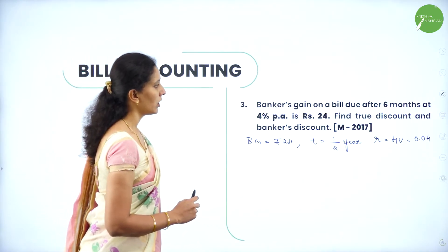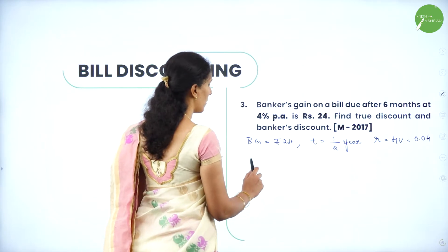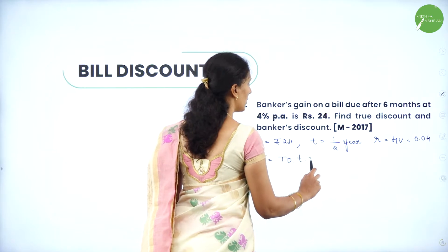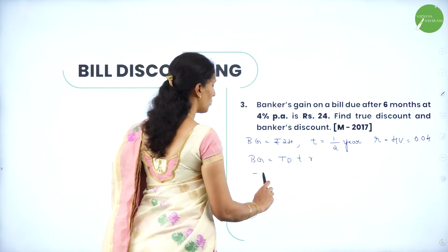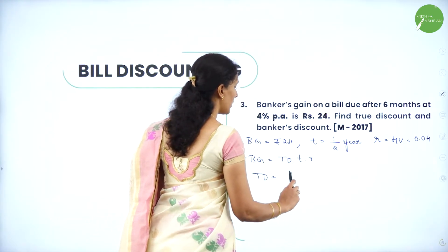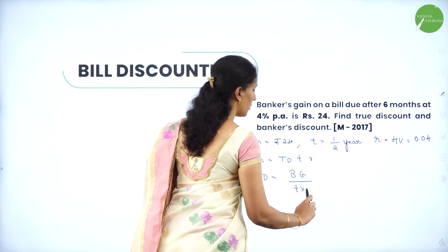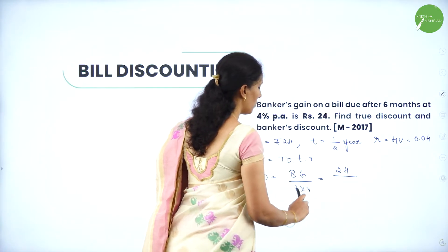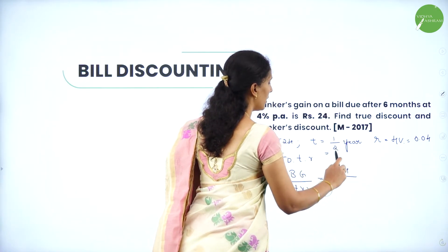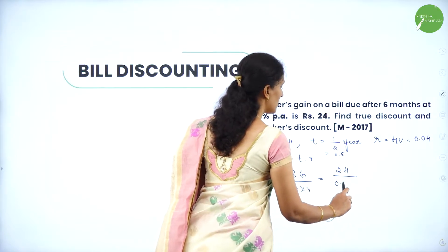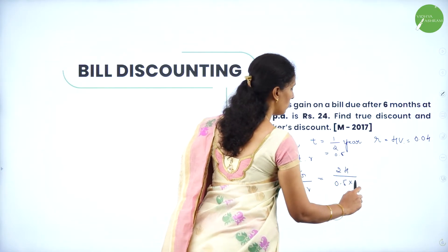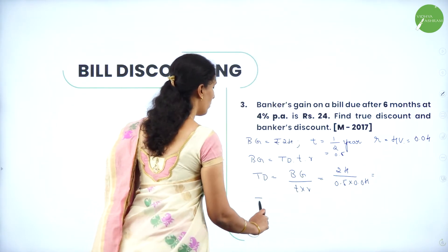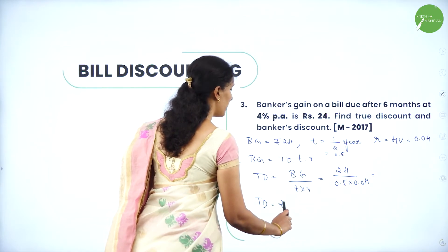We know that banker's gain equals true discount into T into R. So true discount equals BG divided by T into R. Banker's gain is 24, T is 0.5, R is 0.04. So we can write it as 24 divided by 0.5 into 0.04. When you divide this, the true discount becomes Rs. 1200.